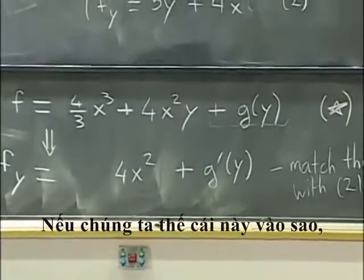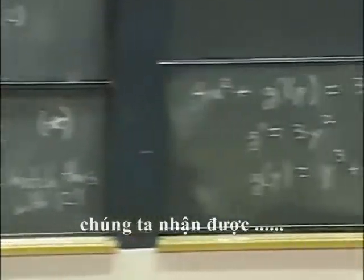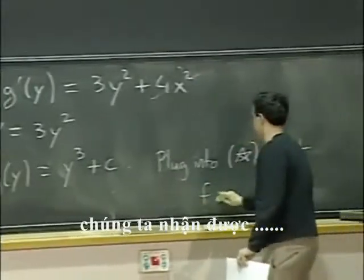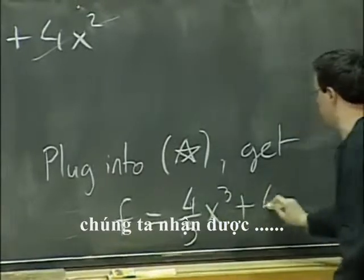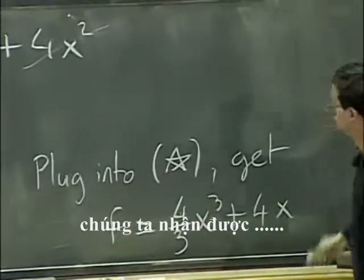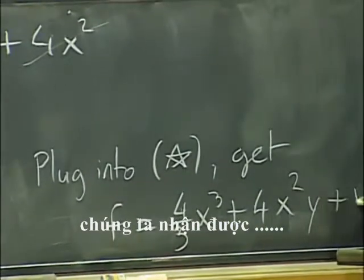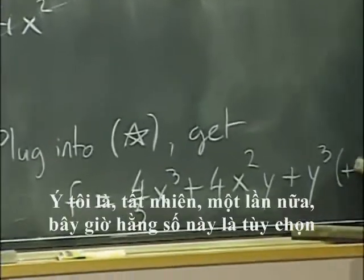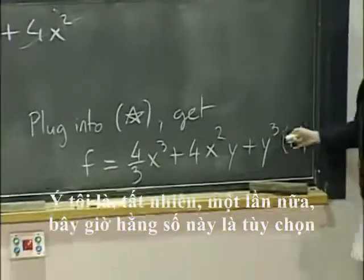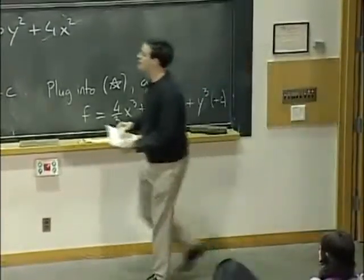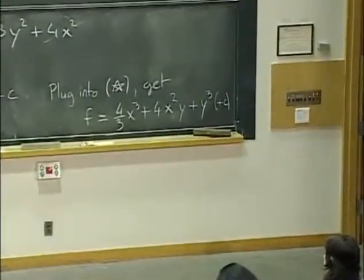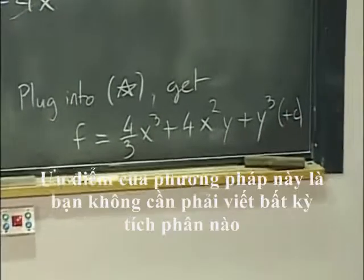If we plug this into star, we get f equals four-thirds x cubed plus 4x squared y plus y cubed plus constant. And I mean, of course, again, now this constant is optional.